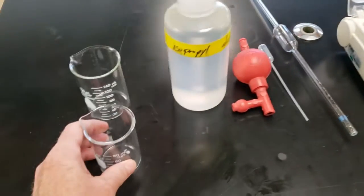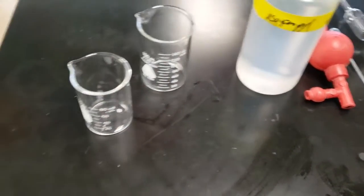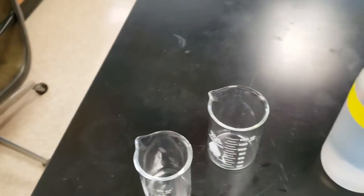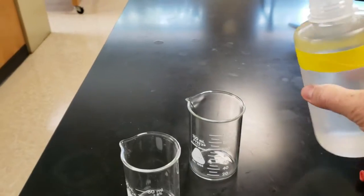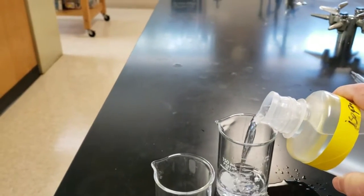Next, we're going to take the beaker off the scale. It's really important. Don't pour things while they're on the scale. And we're going to do our best to put in exactly 20 milliliters of alcohol.